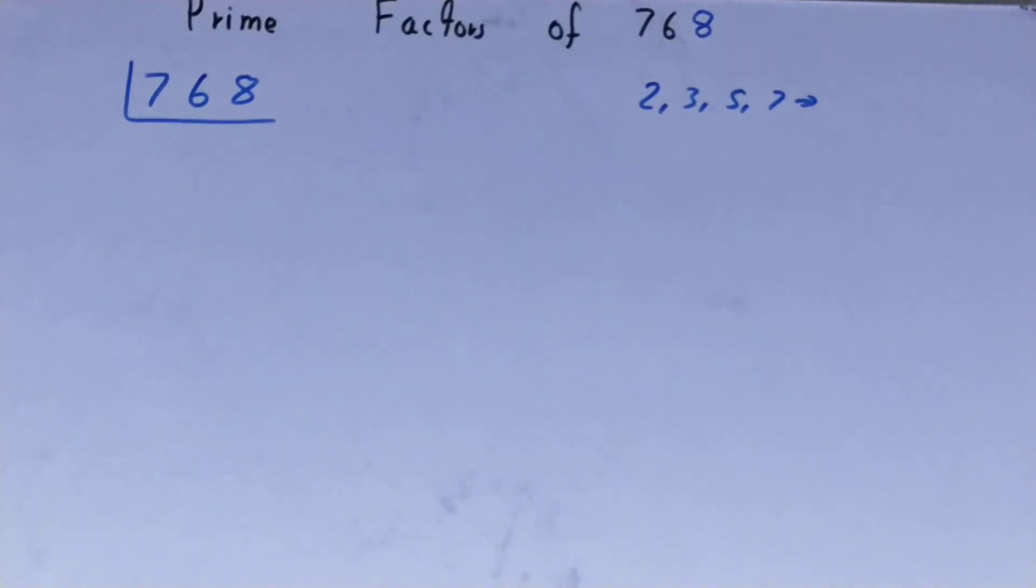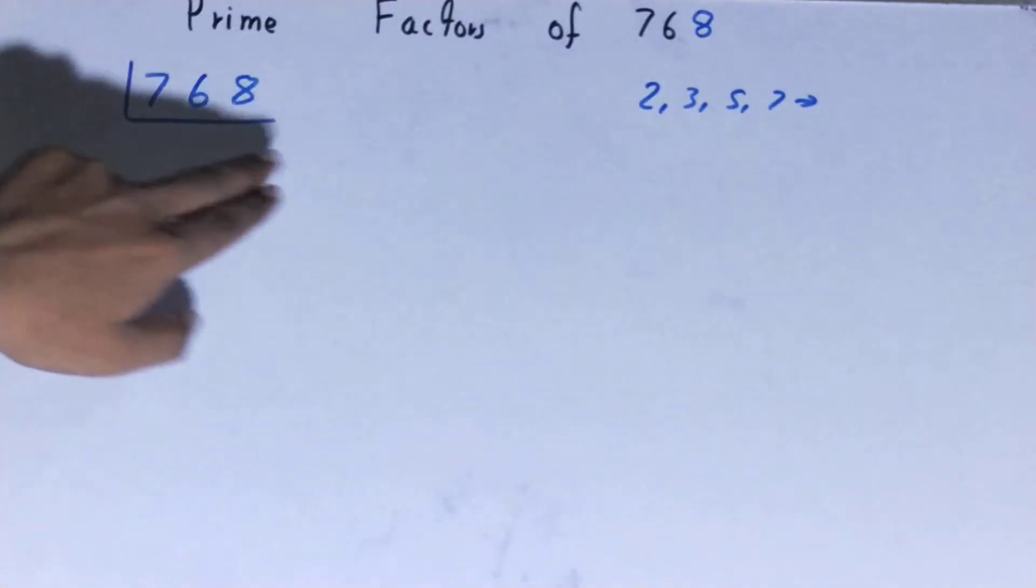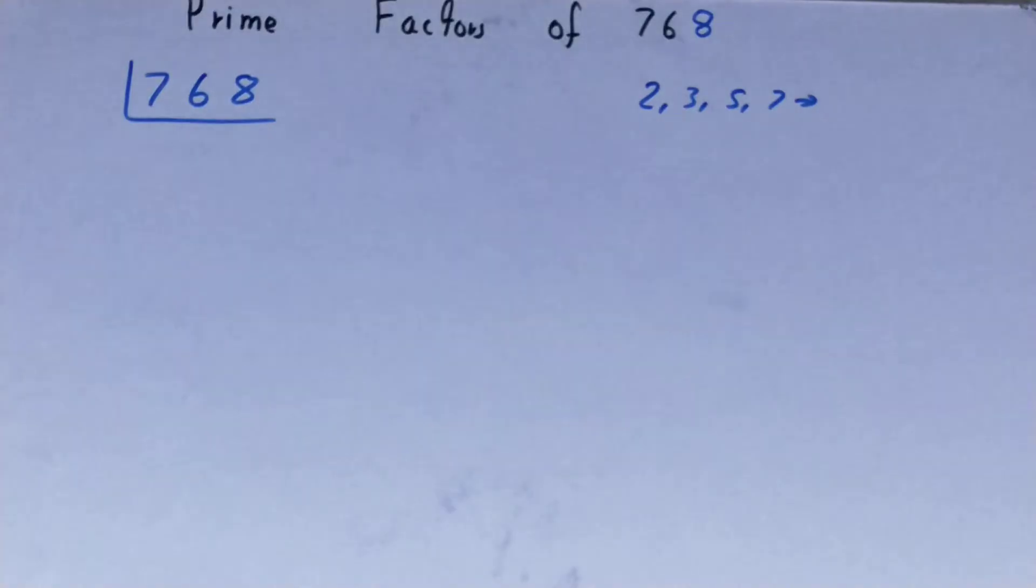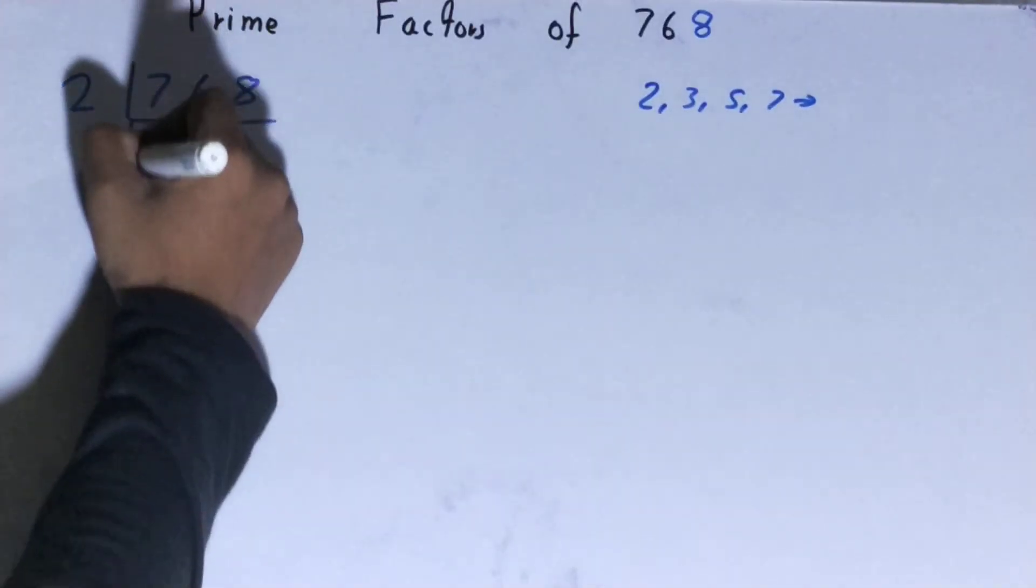We'll start with the lowest prime number, which is 2. Is 768 divisible by 2? Yes it is, because 768 is an even number. So divide it and you'll be left with 384.